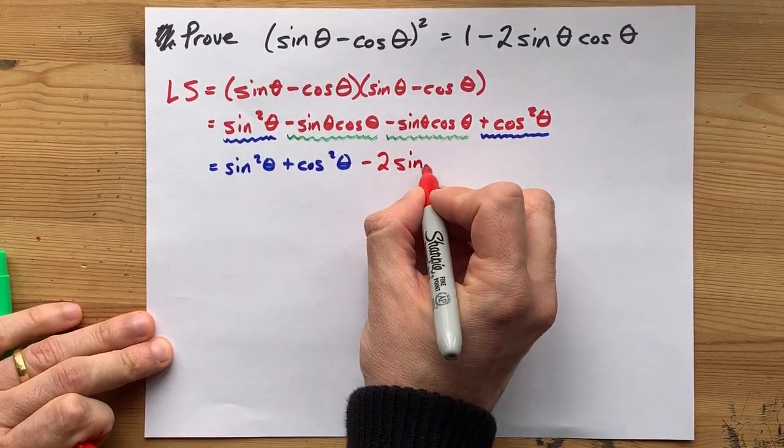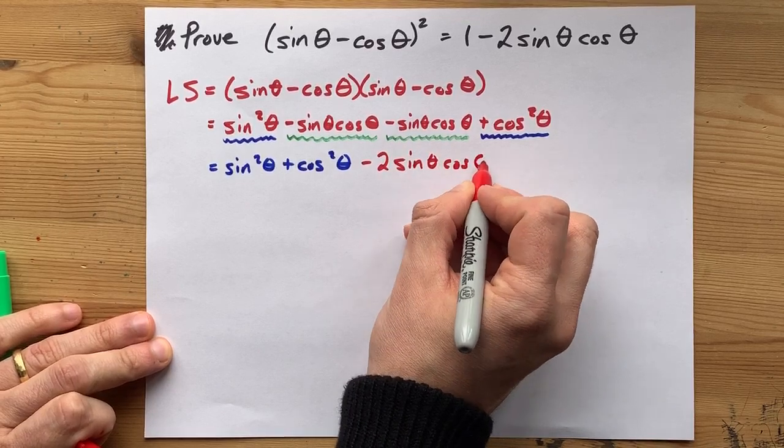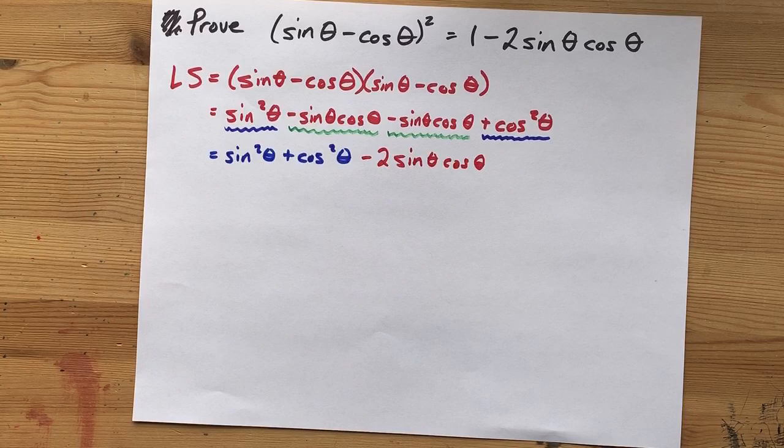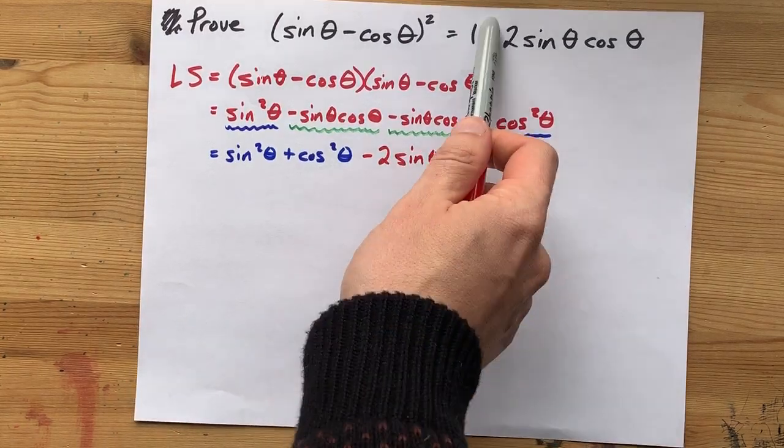See? One, two. Both getting minused. Now that already matches something that's on the right hand side of this equation. What we need to do is to turn this into one.